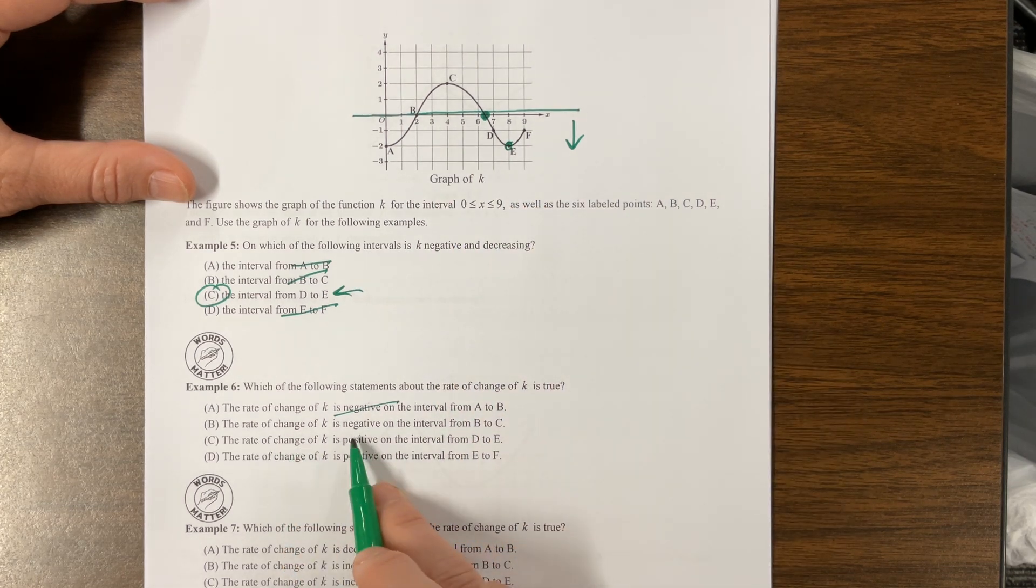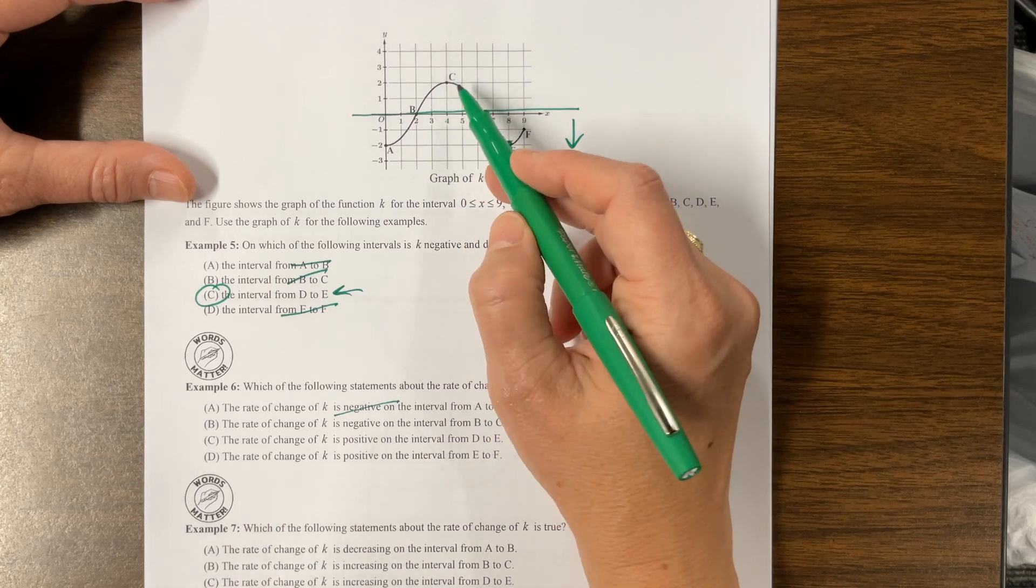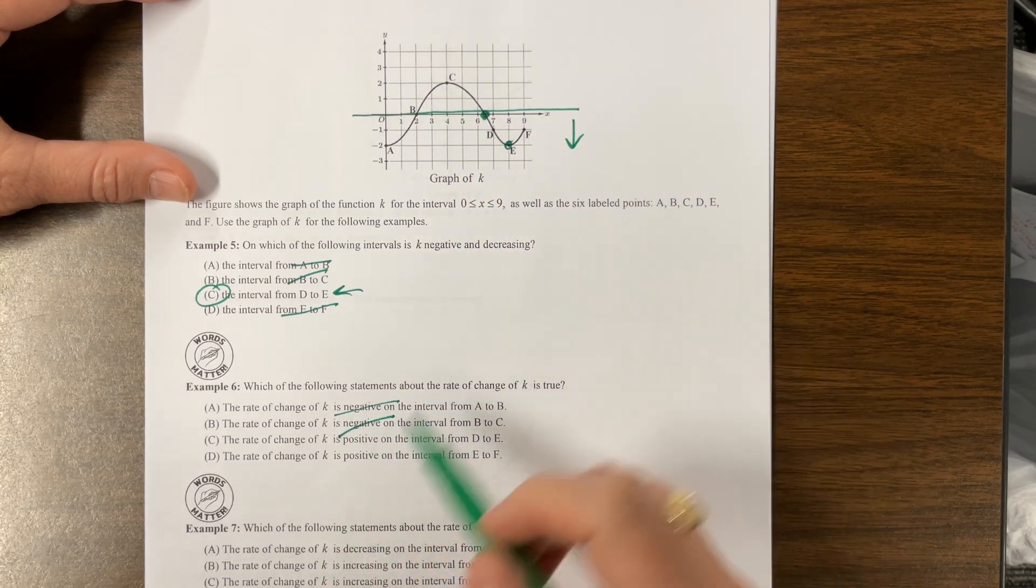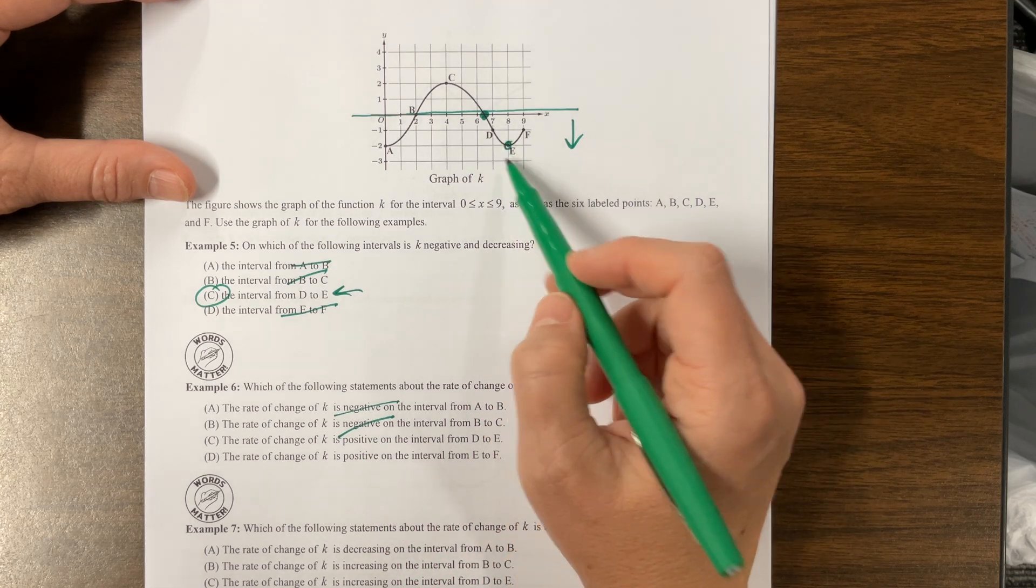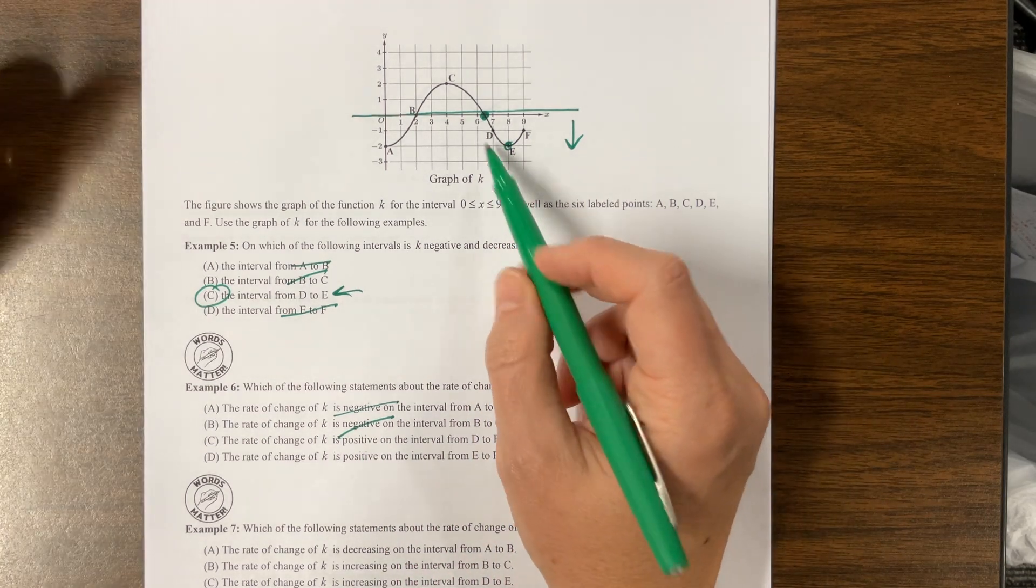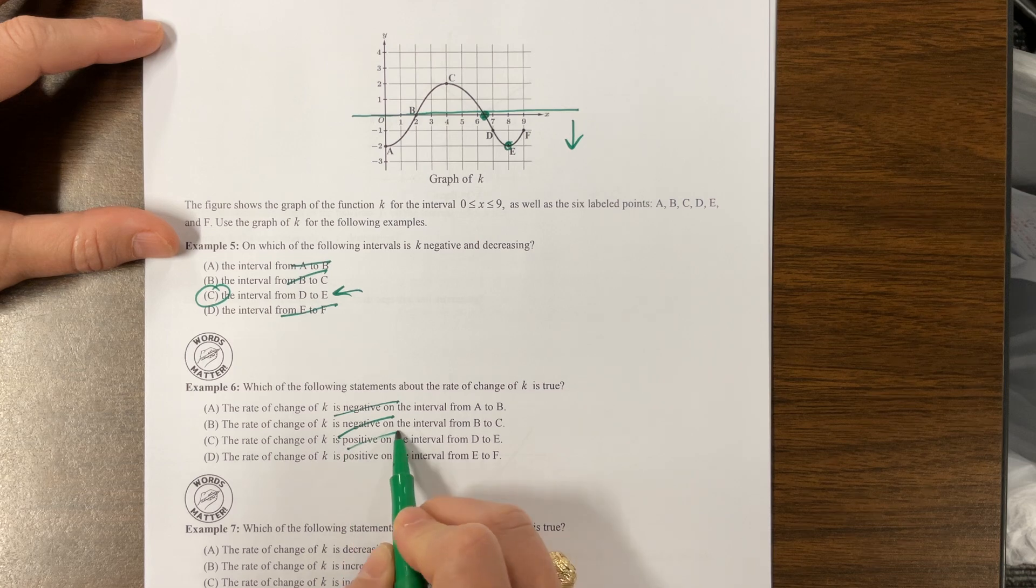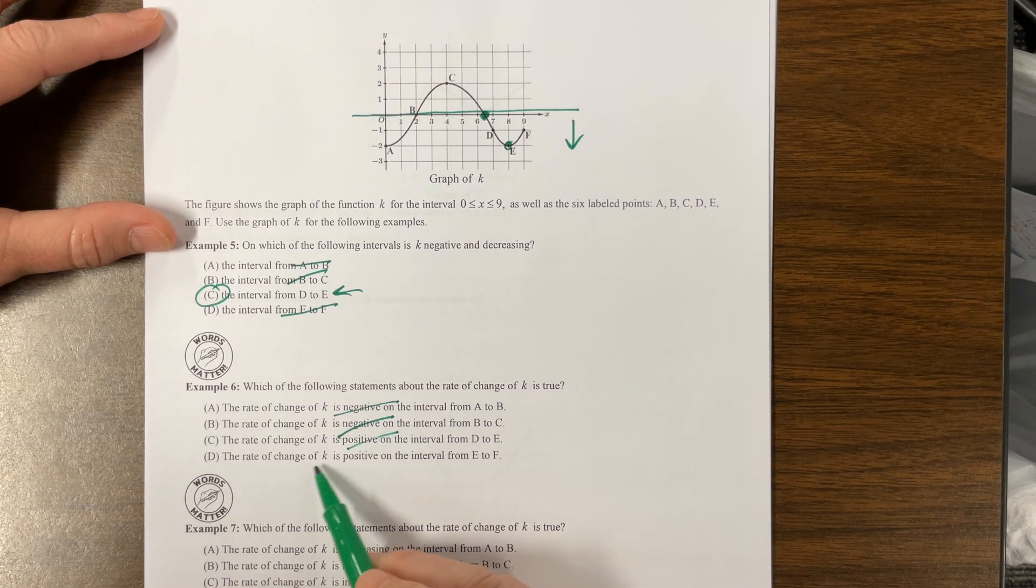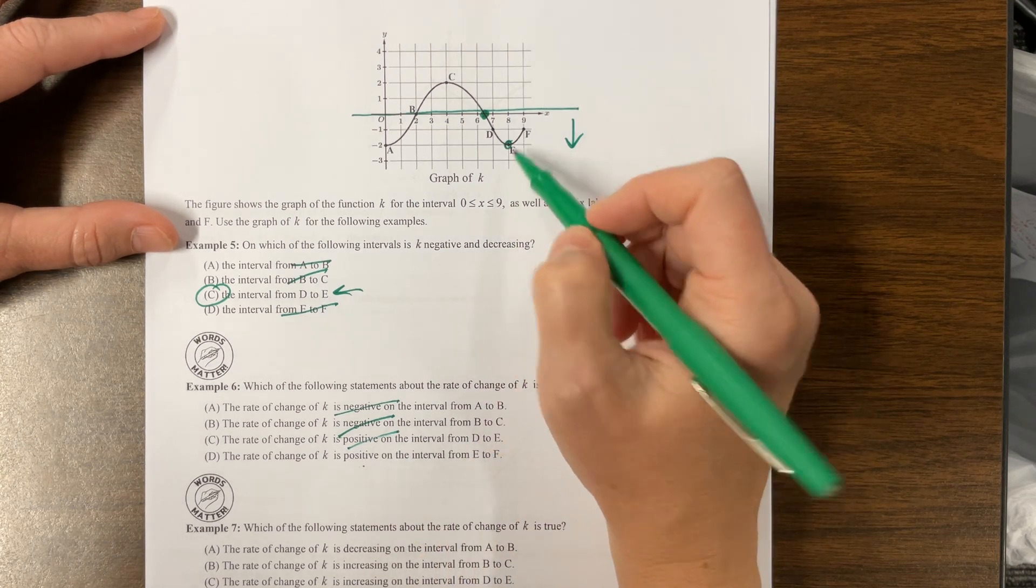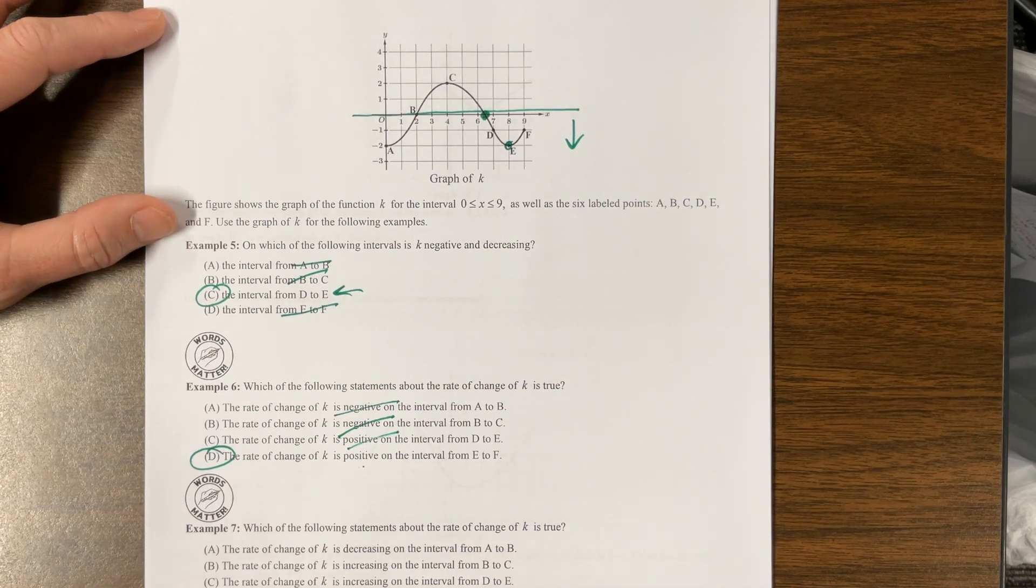The rate of change of K is negative on the interval B to C. If the rate of change is negative, the graph is decreasing. From B to C, we are increasing. So no. The rate of change of K is positive, that means the graph is increasing from D to E. D to E, we are decreasing. It wants us to increase. The rate of change of K is positive on the interval from E to F. Rate of change is positive means the graph is increasing. From E to F, we are increasing. And luckily, we have an answer.